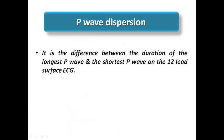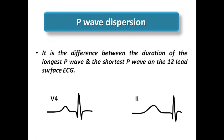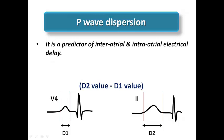P-wave dispersion follows the same concept as QT dispersion: it is the difference between the duration of the longest P-wave and the shortest P-wave on the 12-lead surface ECG. The larger this difference, the higher the risk of atrial fibrillation, because a large difference is a predictor of intra-atrial and inter-atrial electrical delay, indicating remodeling inside the atrium. So QT dispersion increases the risk of torsades de pointes, while P-wave dispersion increases the risk of atrial fibrillation.